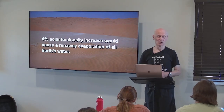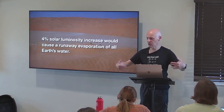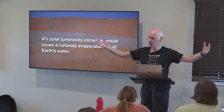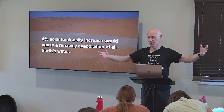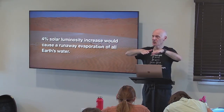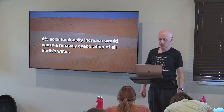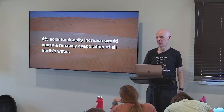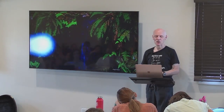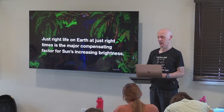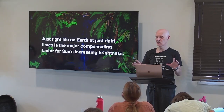Bacteria can handle a 4% increase or 2% decrease in solar brightness, but not creatures more advanced than bacteria. The way God deals with the increasing luminosity of the sun is that he creates just-right life on earth at just-right times — it's life on planet earth that compensates for the increasing brightness of the sun. Someone with a mind who knows the future physics of the sun, earth, and moon must remove no-longer-compensating life and replace it with just-right life forms at just-right times, in just-right amounts, and in just-right locations.